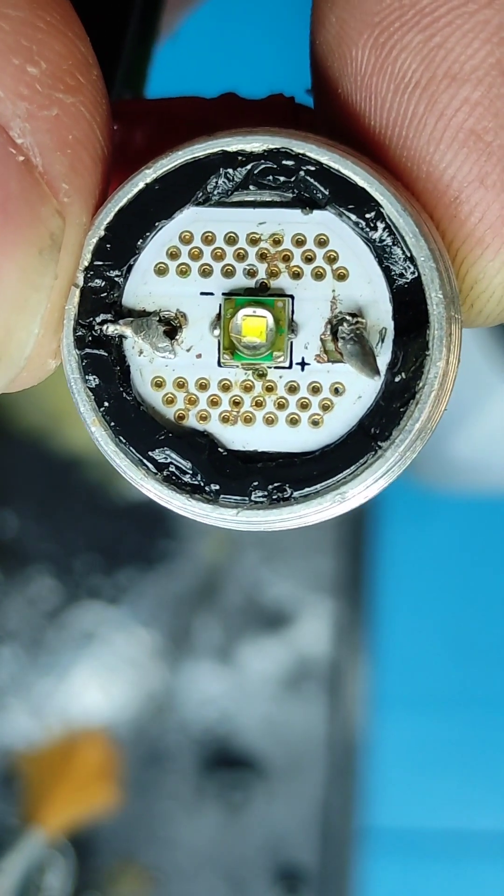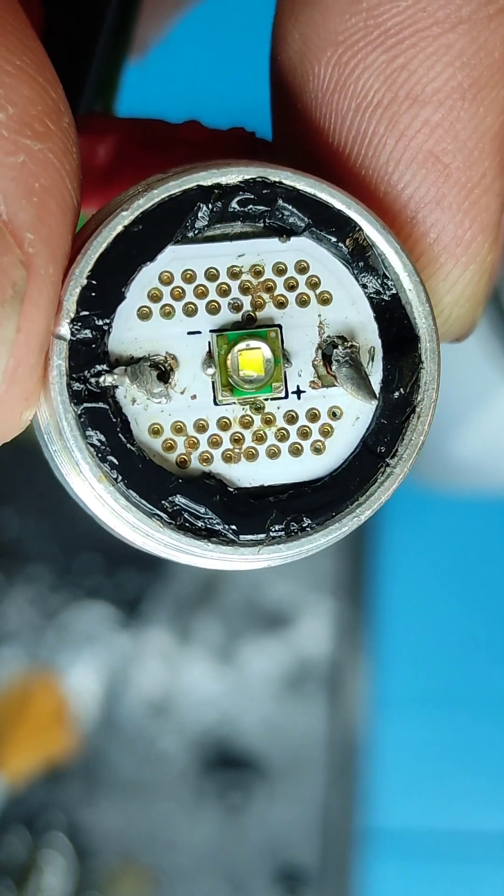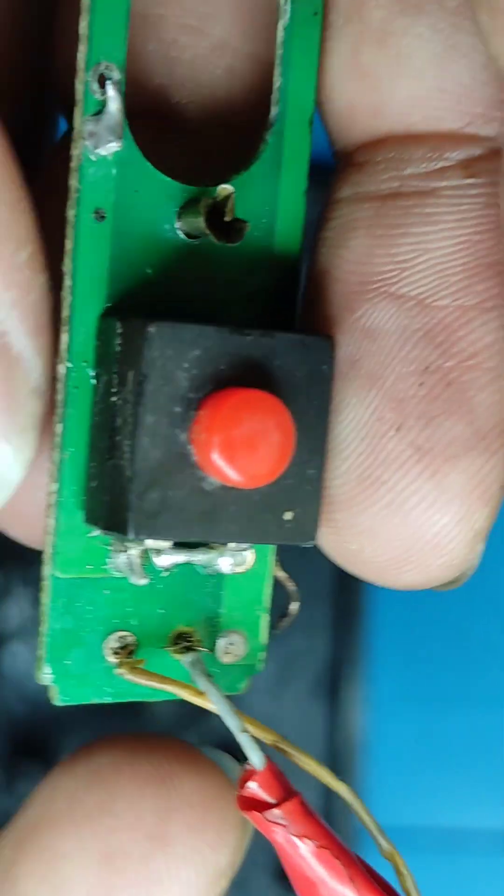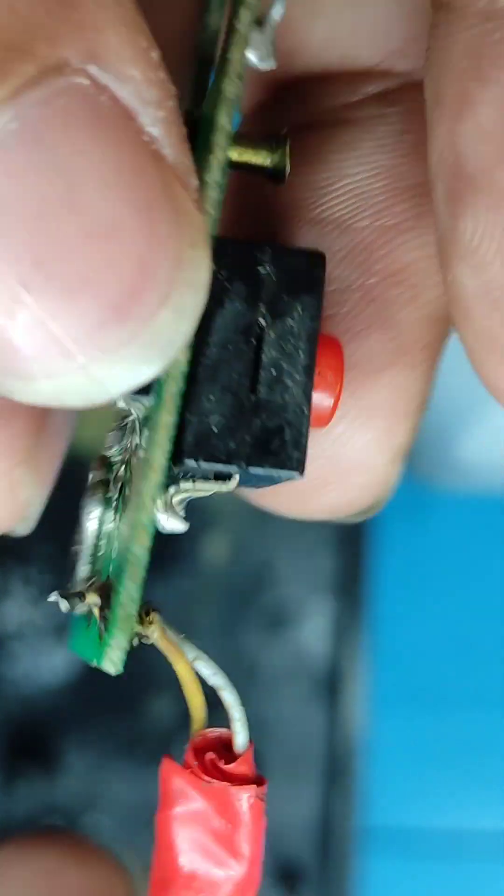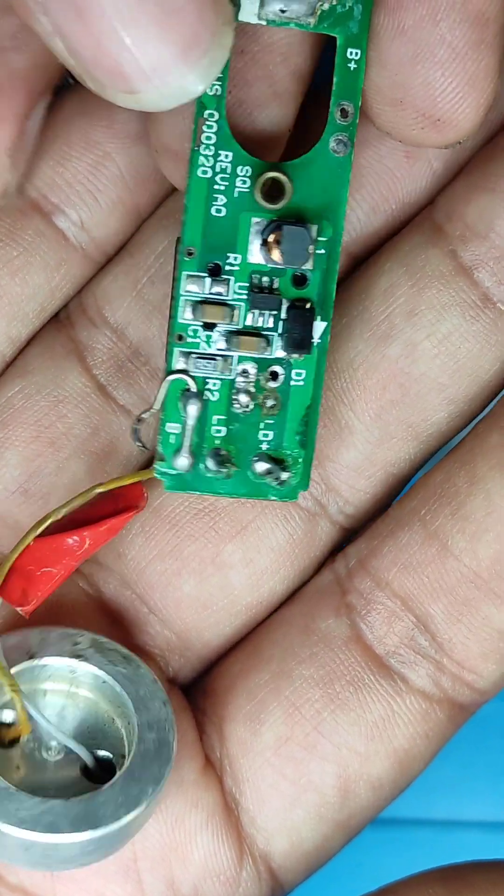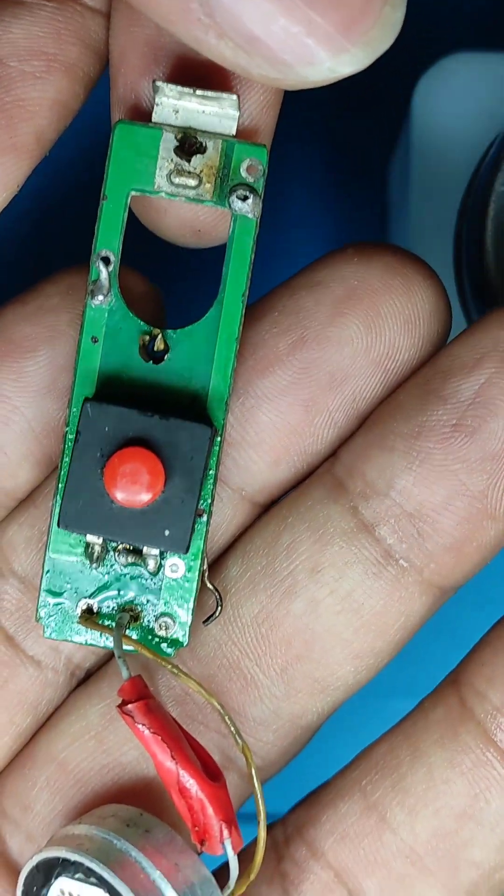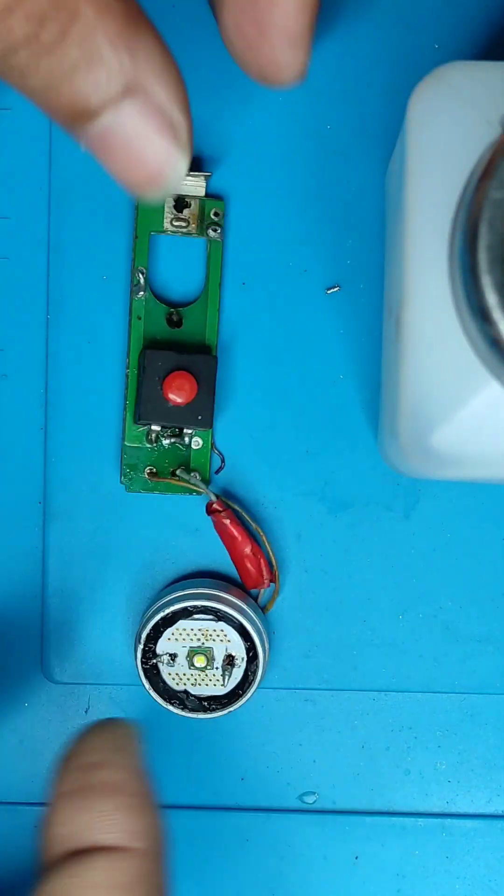And now the board looks much better. It's clean, the LED is also clean. Now let's start checking for the components. Let's see whether the broken inductor is an issue. Let's start from the LED on board, so let's check it with the multimeter.